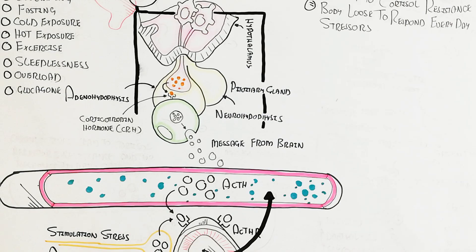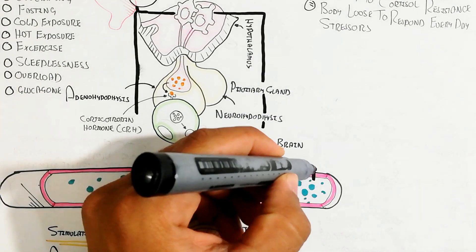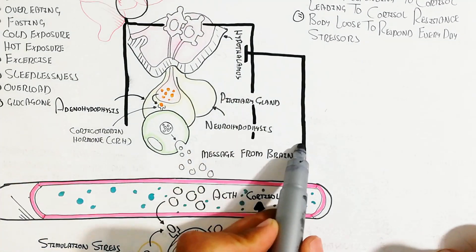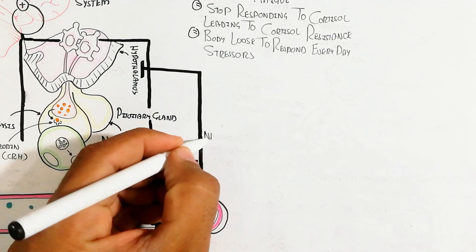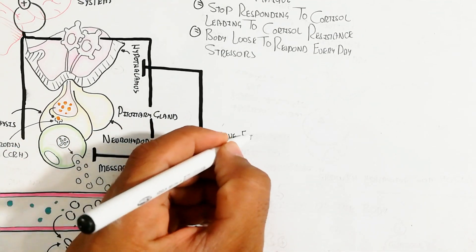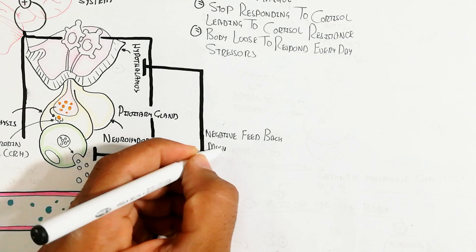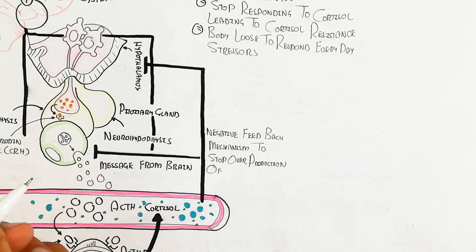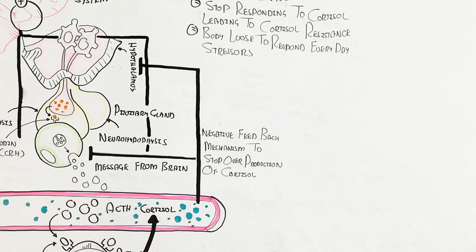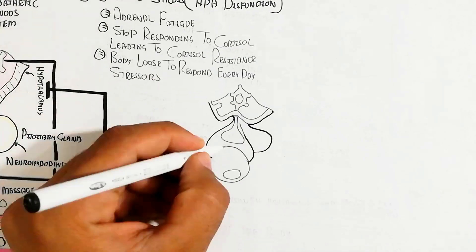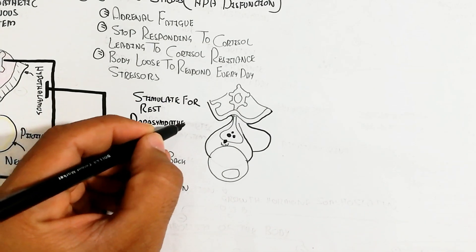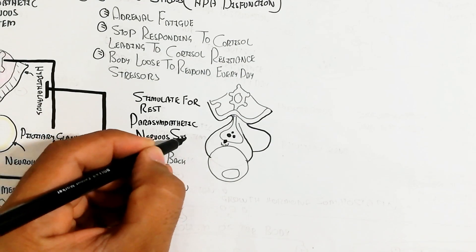Cortisol rushes into the blood circulatory system from the adrenal gland. This hypercortisol level triggers negative feedback to inhibit further cortisol production in a normal person, because chronic overproduction is not required. This negative feedback mechanism stops overproduction of cortisol to maintain normal physiological function. Cortisol then targets several tissues.